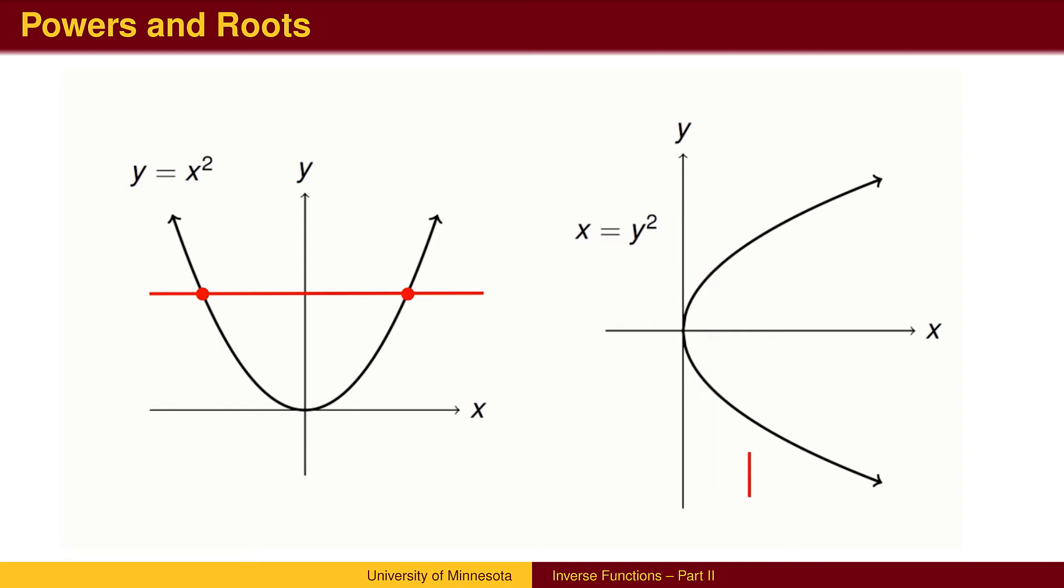If we interchange x and y, we get a graph that is not a function. When defining the function y equals the square root of x to be the inverse of squaring, we need to make a decision as to which branch of the graph to use. For the square root function, we choose the positive answer. We can achieve the same effect by returning to the function y equals x squared and choosing a branch that is one-to-one.